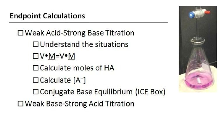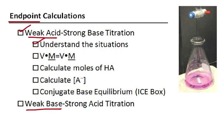I'd like to go over the calculations of the pH at the end point of weak acid titrations and also weak base titrations. We don't need to go over the pH of a strong acid strong base titration because the pH is always 7 — that's a lot easier. So, if we have a weak acid strong base titration, the first thing we want to do is figure out what's the situation that's going on as the titration occurs.